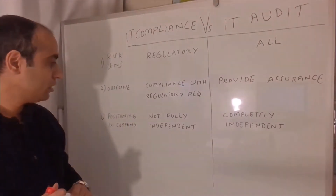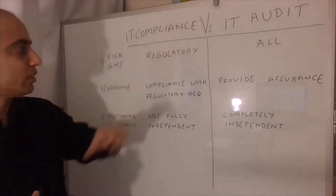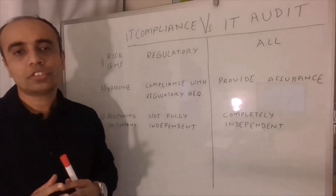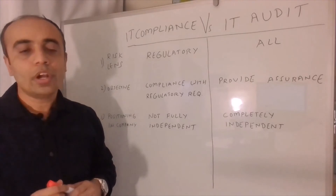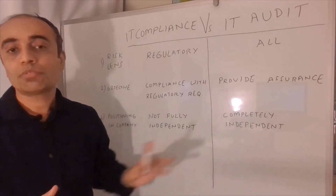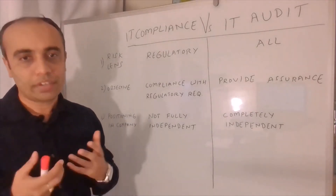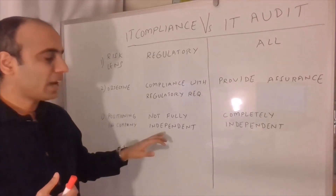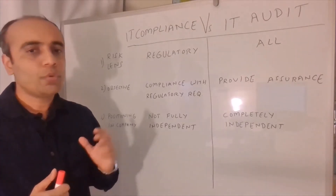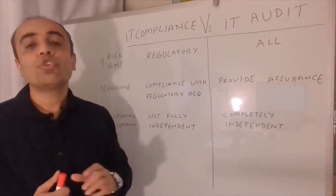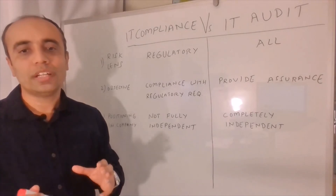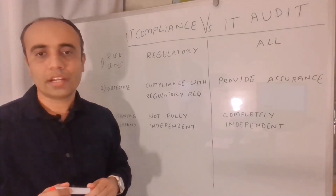The third and last difference between IT compliance and IT audit is positioning inside the company. Where these functions sit in the organization is critical. Audit is completely independent in terms of structure and reporting — that's the whole basis of having an audit function in a company. While compliance is not fully independent but is somewhat part of business functions. Please go to my video titled 'Three Lines of Defense' to get a deeper understanding of how these structures look in a company.